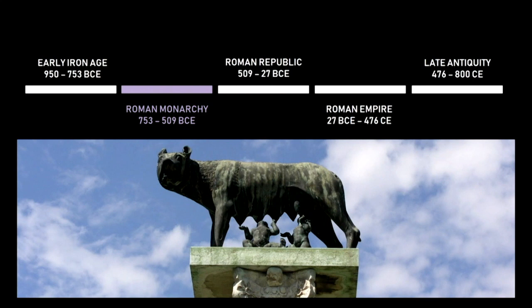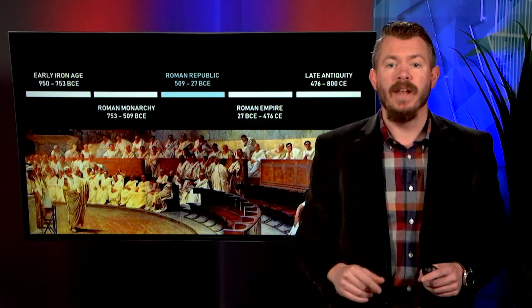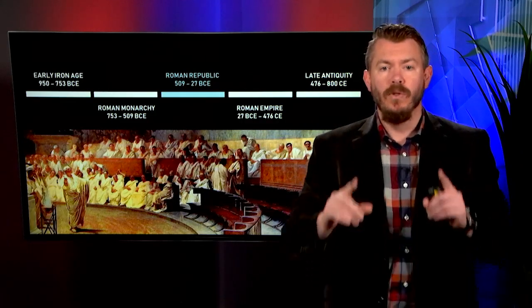But we all know that absolute power corrupts absolutely, and so while those first kings started out pretty good, the last one, Tarquin the Proud, was not a very good ruler. In 509 BC, Lucius Junius Brutus leads a rebellion against that king, kicking him out of the city of Rome and instituting the Roman Republic. The guiding ideology of the Republic is there are no more kings in Rome — no single person shall rule. Instead, even at the highest levels of government, there are always at least two people ruling: the two consuls, elected by the people.